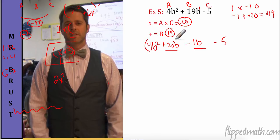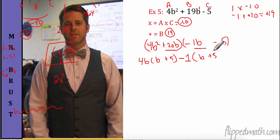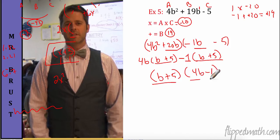Group the first two and last two terms. First group: common factor is 4b — take it out, leaving (b + 5). Second group: take out a negative 1, leaving (b + 5). Common binomial factor is (b + 5) — factor it out. What's left is (4b − 1). So the factored form is (b + 5)(4b − 1). Quick check: b times 4b is 4b squared ✓; 5 times negative 1 is negative 5 ✓.